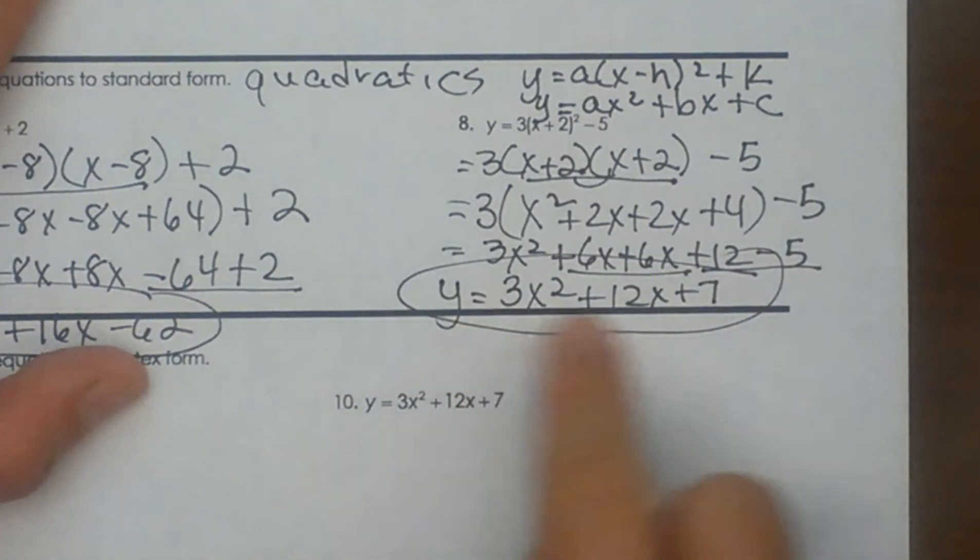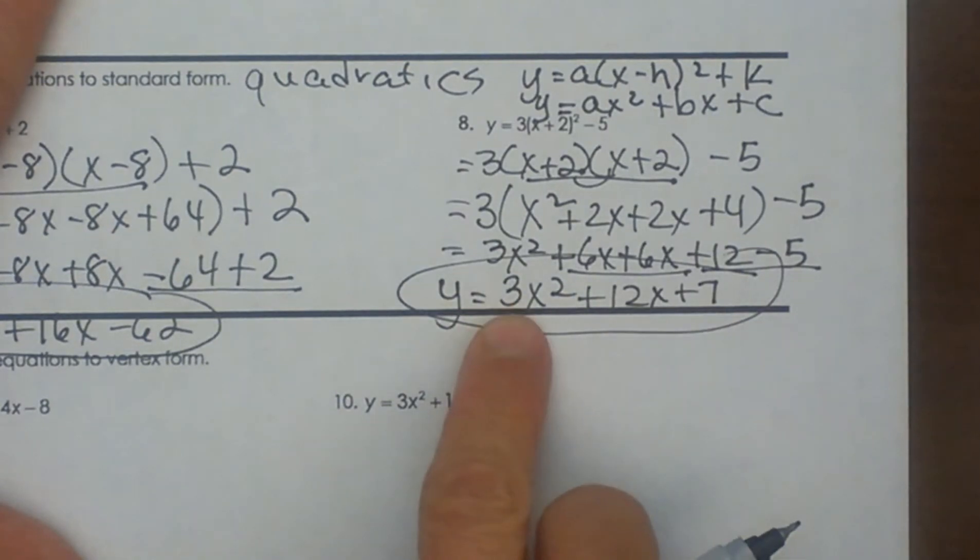And there's the equation in standard form, where a is 3, b is 12, and c is 7.